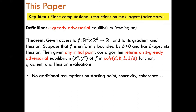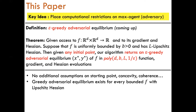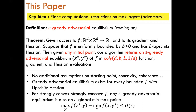This result only assumes that the function f is bounded with Lipschitz-Hessian and makes no other assumptions on f like concavity or convexity. It also does not make any assumptions on the point where our algorithm is initialized. A corollary of our result is that it guarantees the existence of an Epsilon-Greedy Adversarial Equilibrium on any function which is bounded with Lipschitz-Hessian. We also show that in the special case where f is strongly convex, strongly concave, any Epsilon-Greedy Adversarial Equilibrium is also an Epsilon-Global-Min-Max point of f — in other words, our equilibrium generalizes the notion of global min-max in the strongly convex, strongly concave setting.